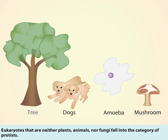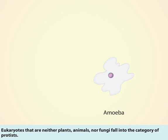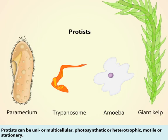Eukaryotes that are neither plants, animals, nor fungi fall into the category of protists. Protists can be uni- or multicellular, photosynthetic or heterotrophic, motile or stationary.